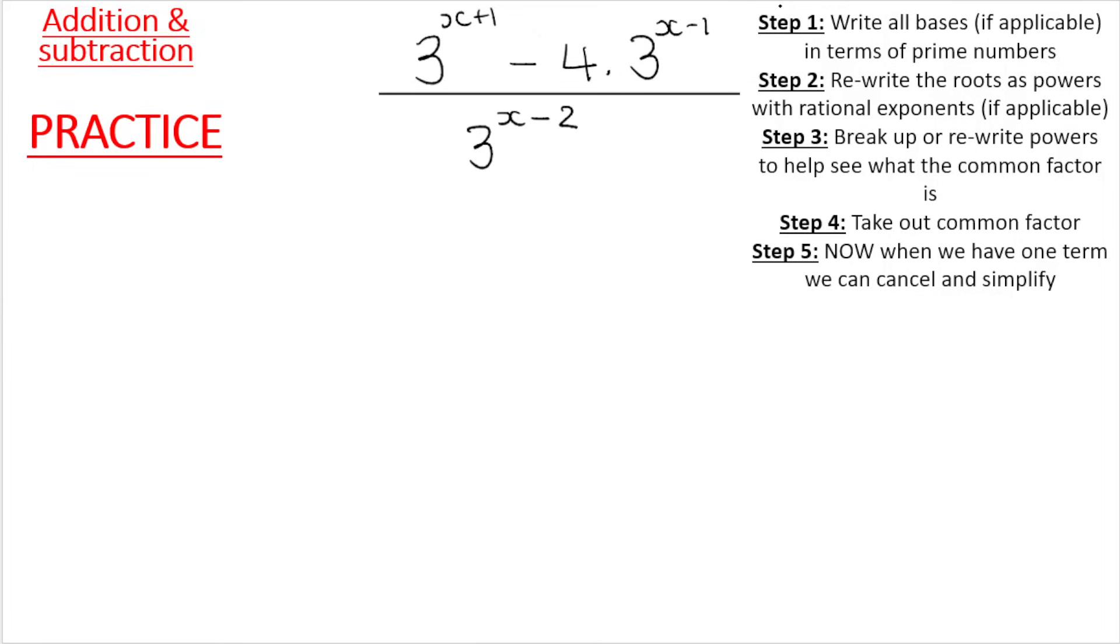So write all bases in terms of prime numbers, if applicable. Now, we will see later on if we feel like this is very necessary. Yes, you can write 4 as 2 to the power of 2, and you may do that. It may or may not be helpful in the sum, because I don't see another 4 in the sum. I don't think it's going to be helpful, but if you do it, it won't hurt. Then rewrite roots. We don't have roots.